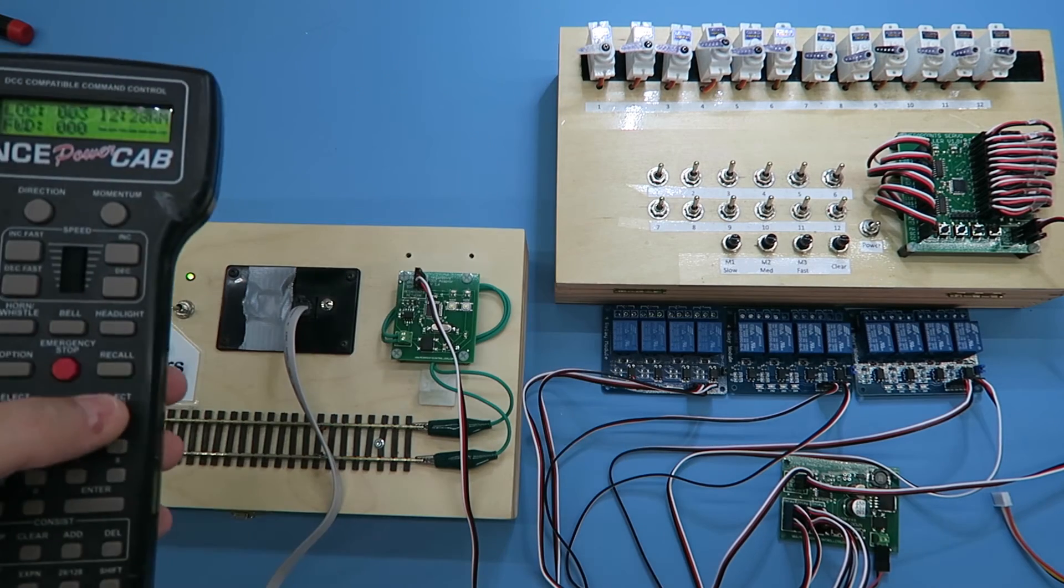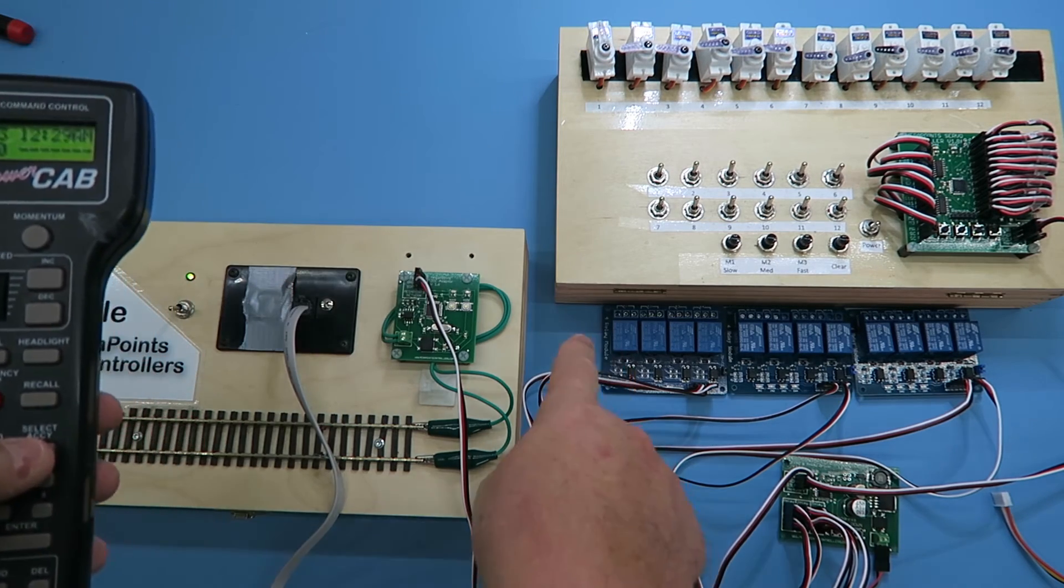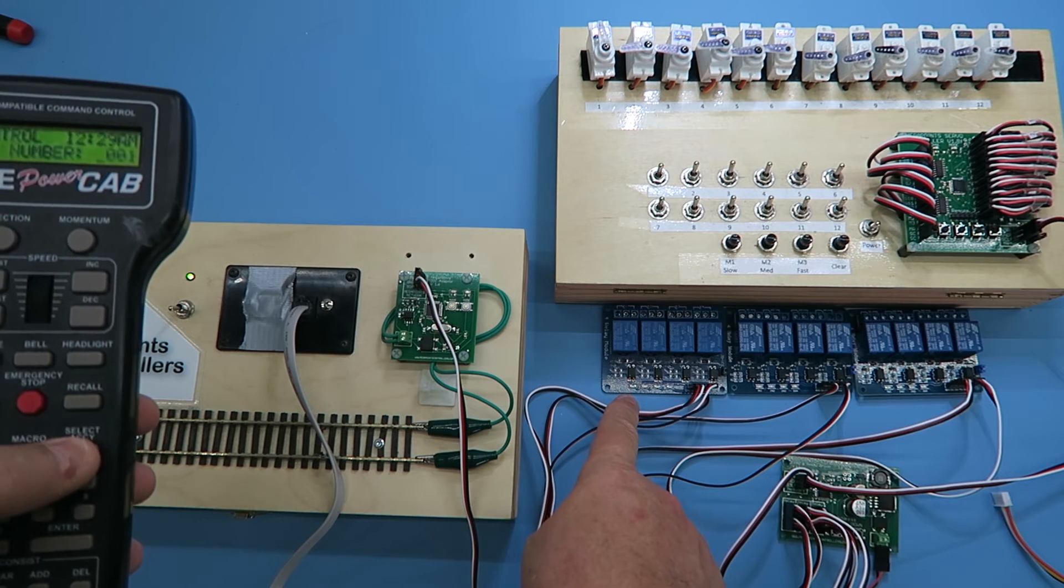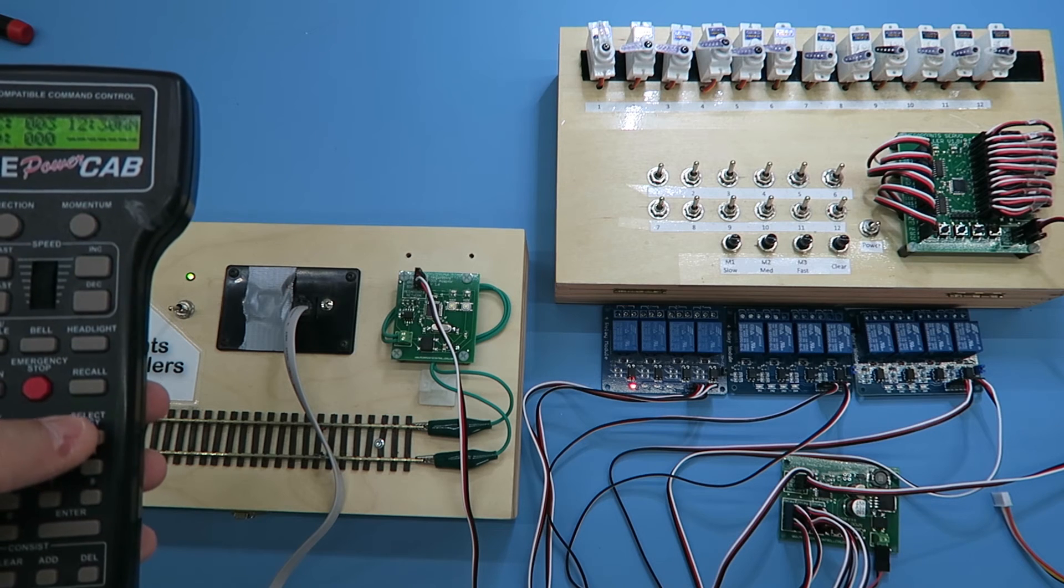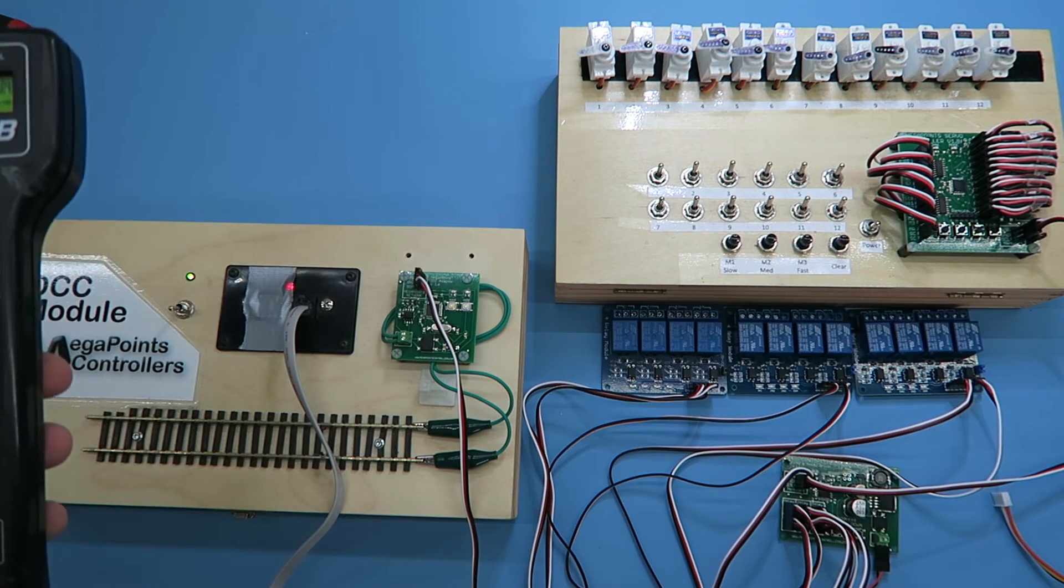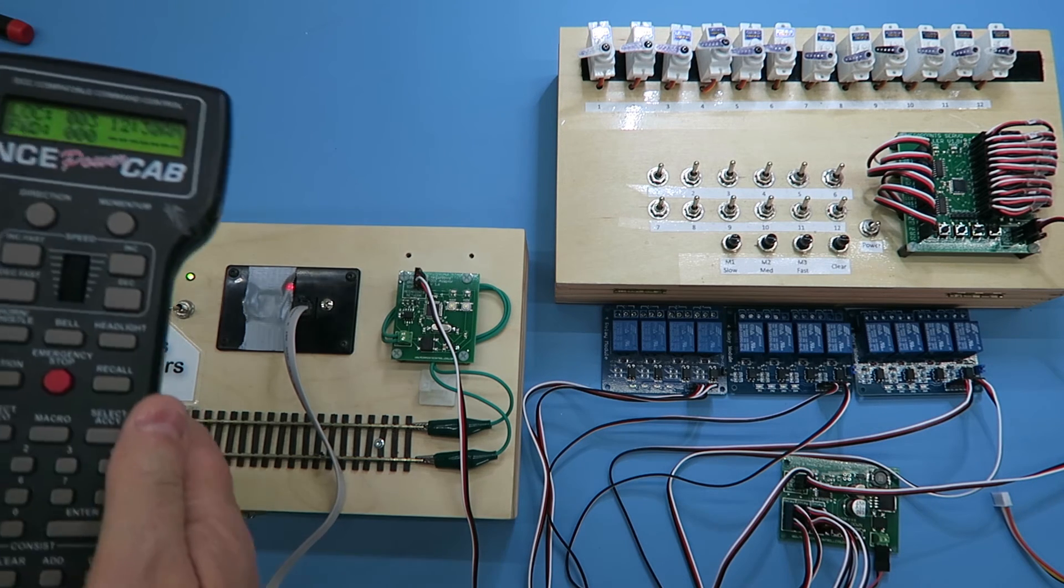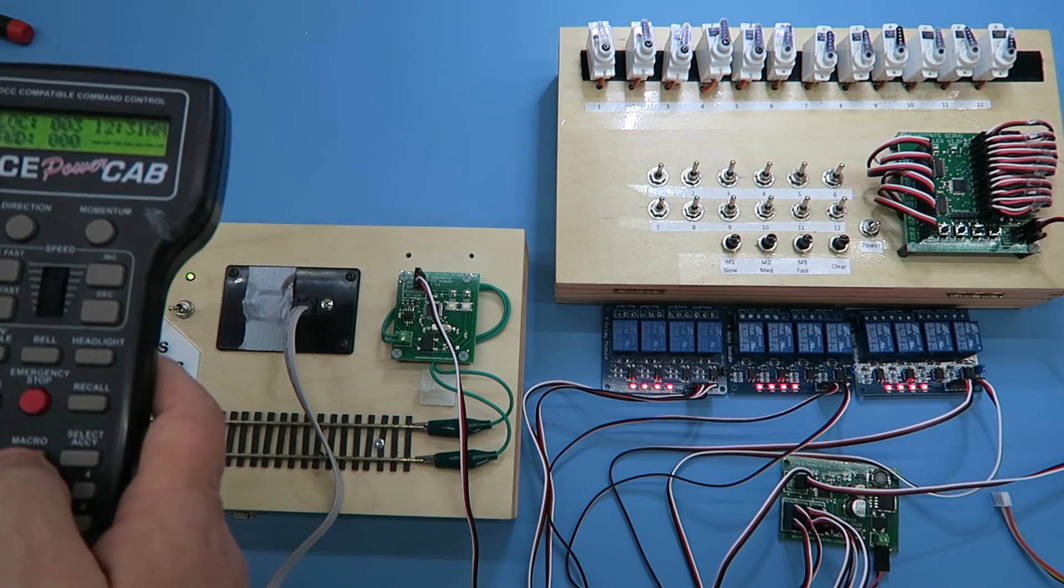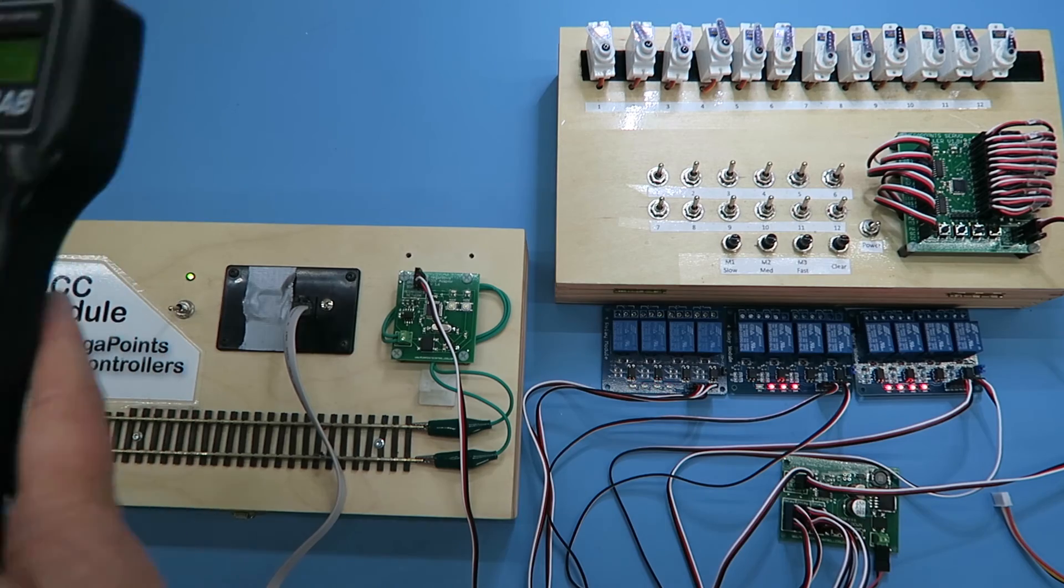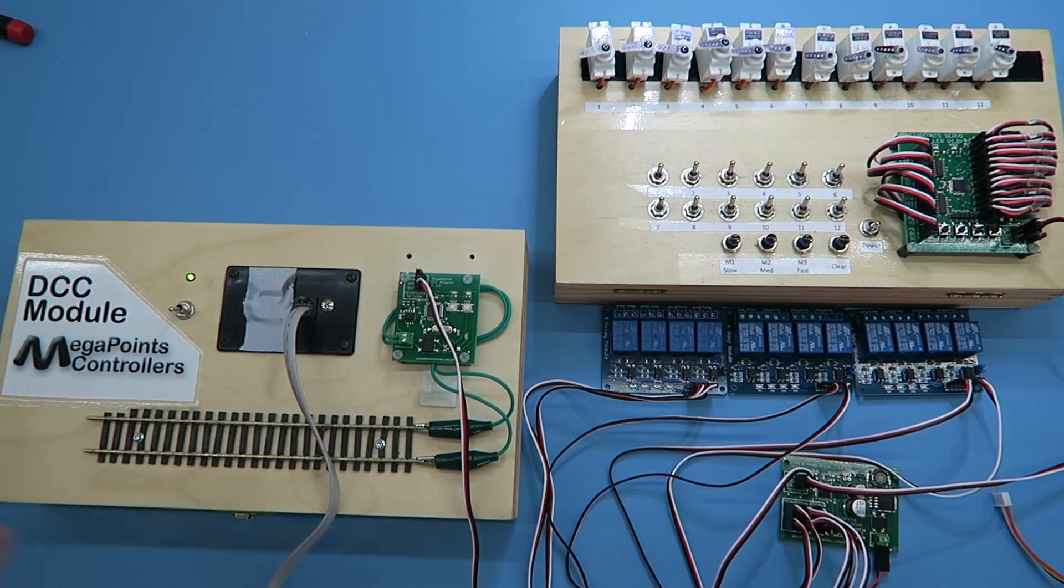So I'll adjust points one and you'll see the servo move and the corresponding relay illuminate so in this example it's being used as a frog polarity switch. Here's a macro let's move them all and back.